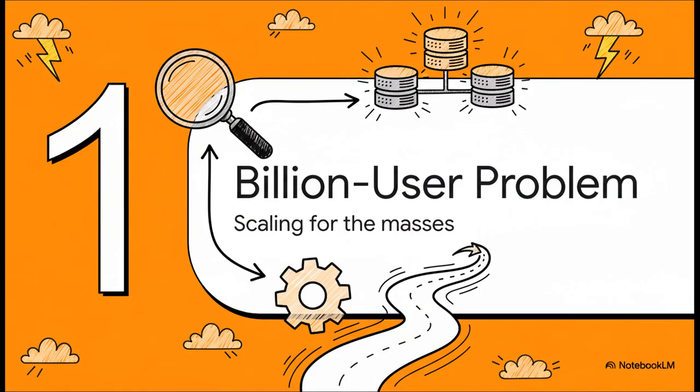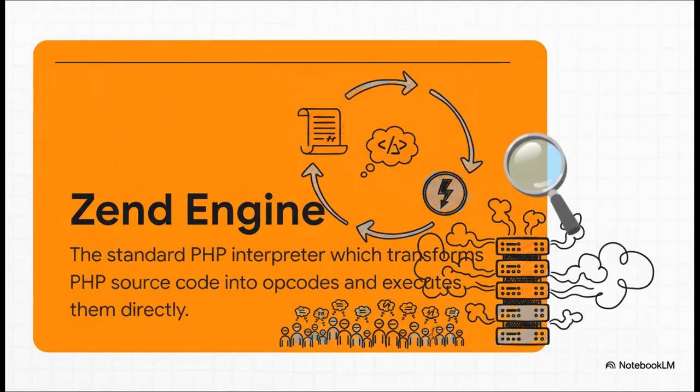So to figure out how they solved it, we first have to understand what they were dealing with. Let's pop the hood and see how PHP usually works. Okay, so here's the deal with the Zend engine. It's an interpreter. The best way to think about it is like a live translator who's reading a script out loud for the very first time, every single time. So for every single page request, from every single user, it's doing the same thing over and over, reading the code.